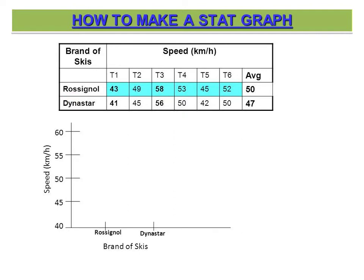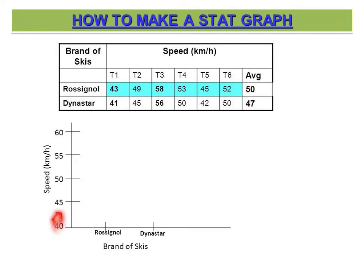When you set up your axis for a graph like this, you put your manipulated variable down here just like before, except you spread out your two variables — Rossignol and Dynastar — across your x-axis, giving them a little space so it looks nice, not right next to each other. The other difference is how you come up with your range on your y-axis, from 40 to 60. You need to look through all of your data including the trials and find the lowest and highest number. I see that 41 is my lowest — that's why I left space at 40 — and 58 is the highest, that's why I decided to go all the way up to 60.